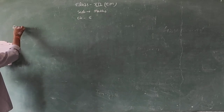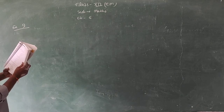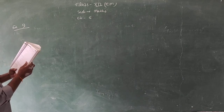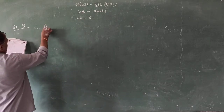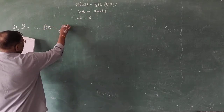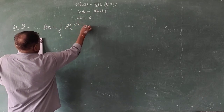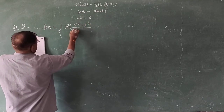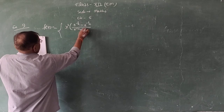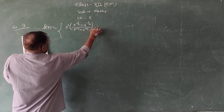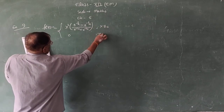Example number 9: If the following function is continuous at x equals 0, then examine its differentiability at x equals 0. f(x) equals x squared times [e^(1/x) minus e^(-1/x)] divided by [e^(1/x) plus e^(-1/x)], when x is not equal to 0, and 0 when x equals 0.